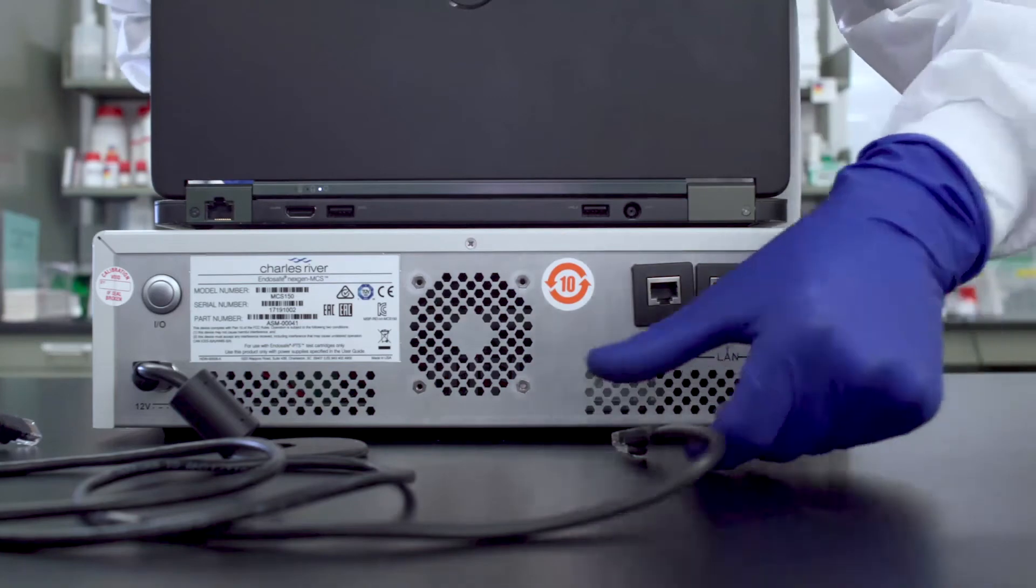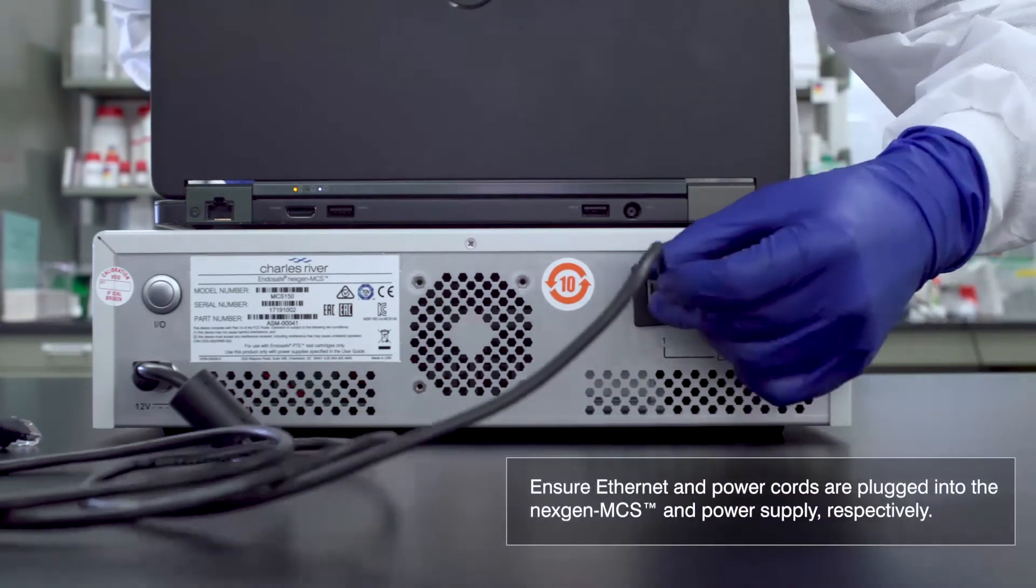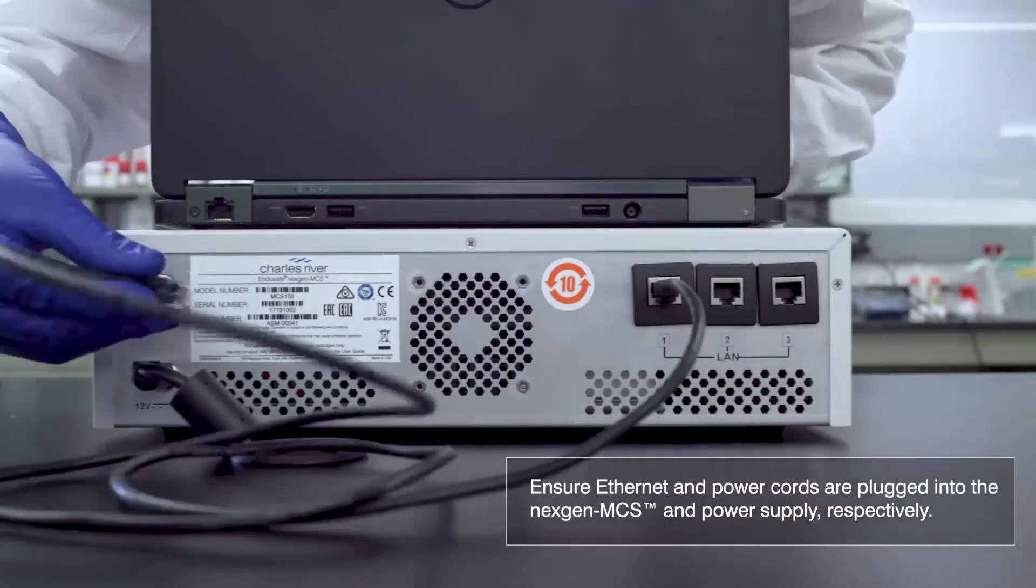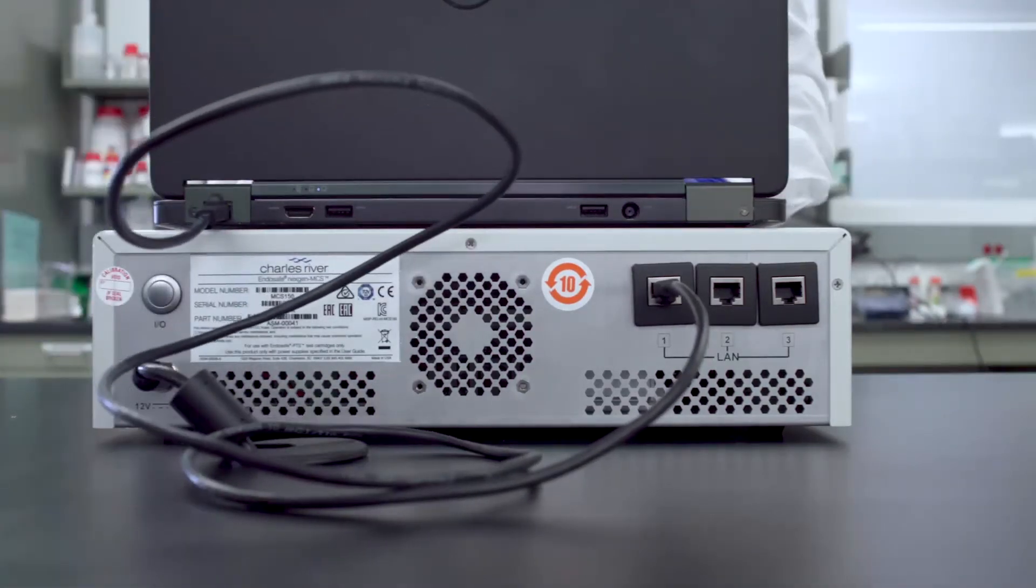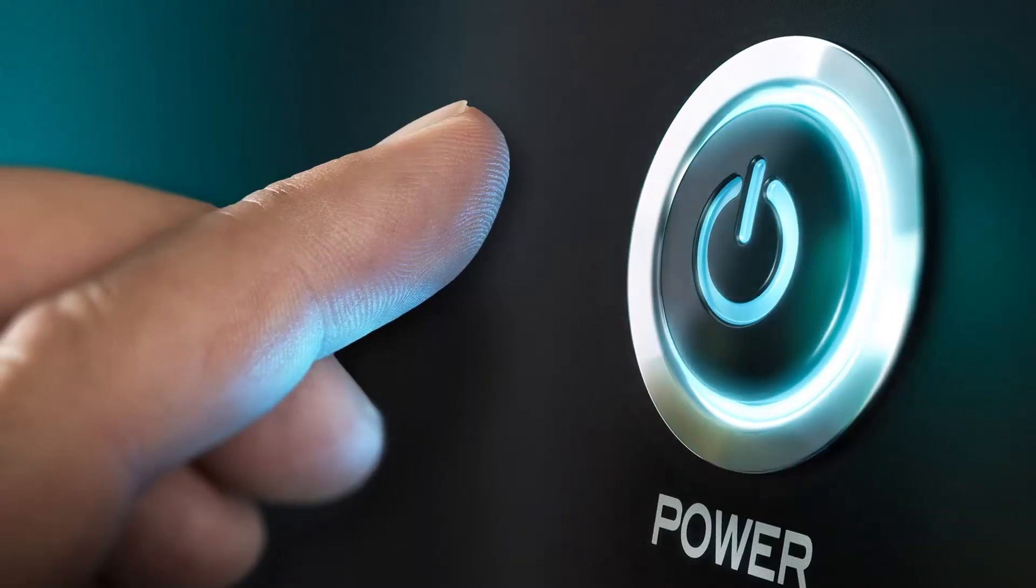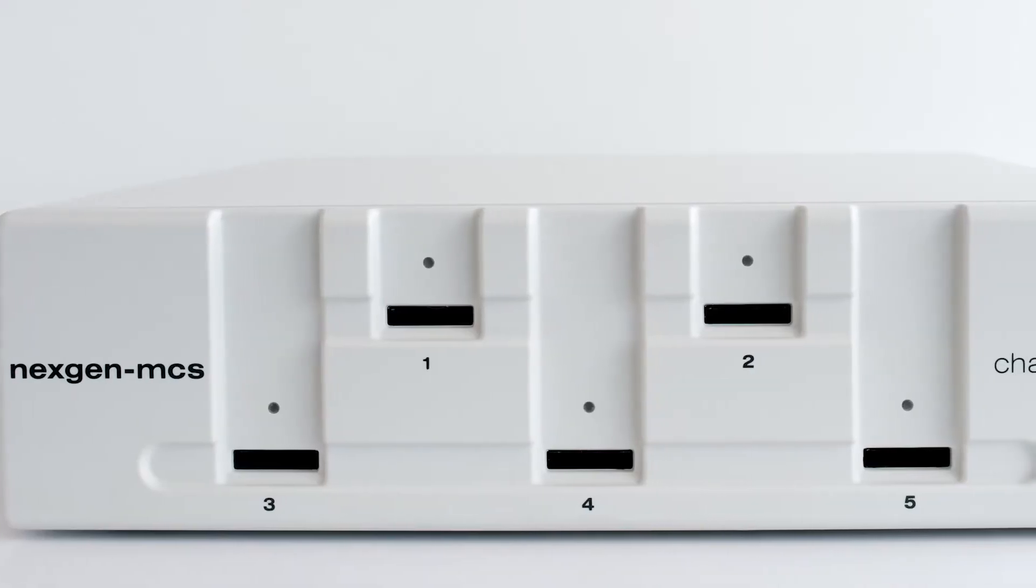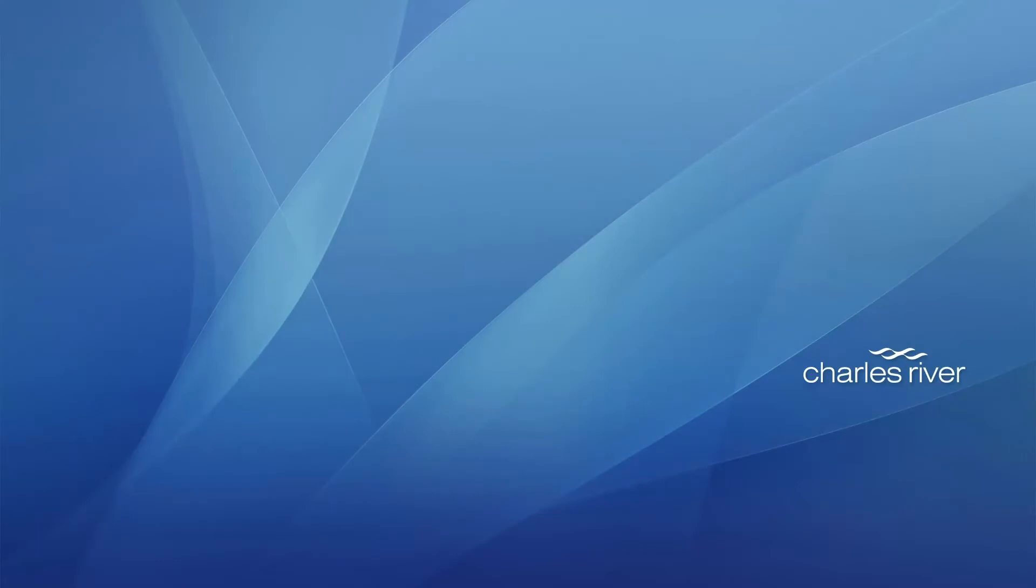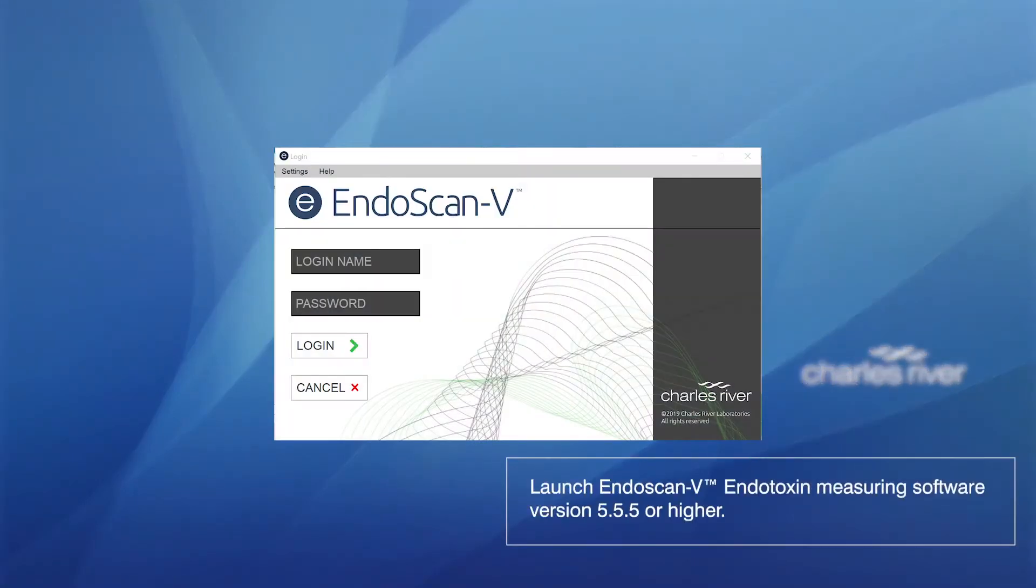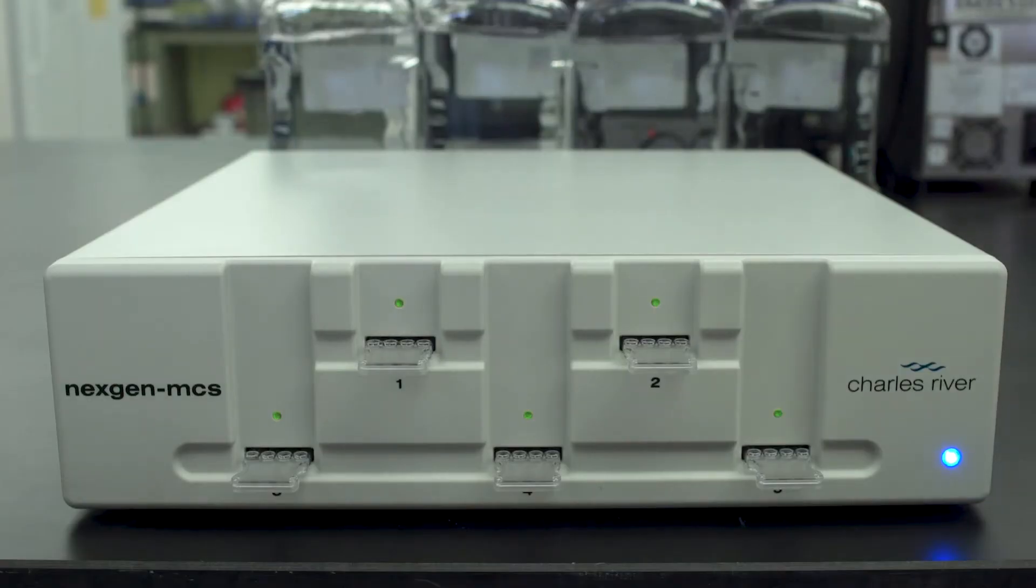In order to begin your testing, you will need to ensure Ethernet and power cords are plugged into the NextGen MCS and power supply, respectively. Once powered on, the LEDs over the bays will illuminate to green. Turn on your computer and launch EndoScan-V, endotoxin measuring software, version 5.5.5 or higher.